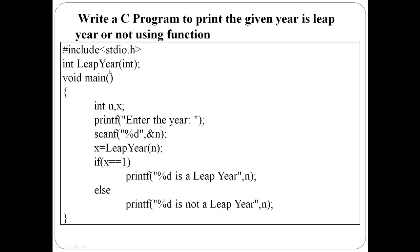In the main function, enter the year and scan the value into n. Then function call: leap year of n — that year is passed. The result is stored in x, which will be either 0 or 1. If x is equal to 1, it is a leap year; else it is not a leap year.